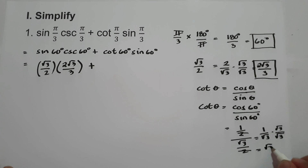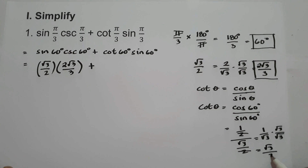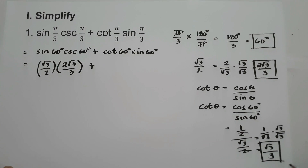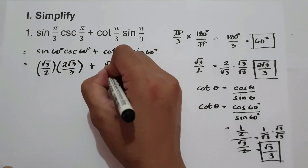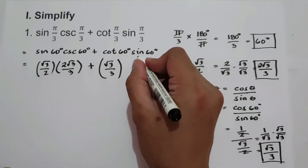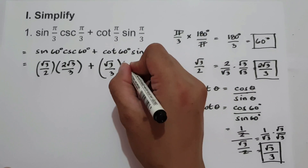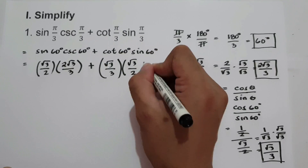1 times square root of 3 is square root of 3. Square root of 3 times square root of 3 is square root of 9, and square root of 9 is 3. So cotangent 60 degrees equals square root of 3 over 3. And sine 60 degrees is square root of 3 over 2.